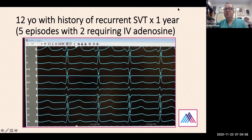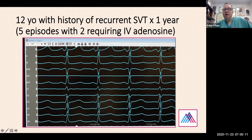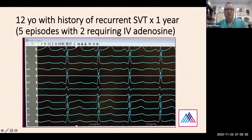I'd like to go over this ablation we did recently. This is a 12-year-old with a history of recurrent SVT for a year, with several episodes requiring intravenous adenosine to terminate the tachycardia. Here we are in sinus rhythm — there was some discussion in the cath lab about whether lead one might show pre-excitation, but in the other leads the PR interval was longer, so we'll look at the intracardiac signals to determine what's going on.